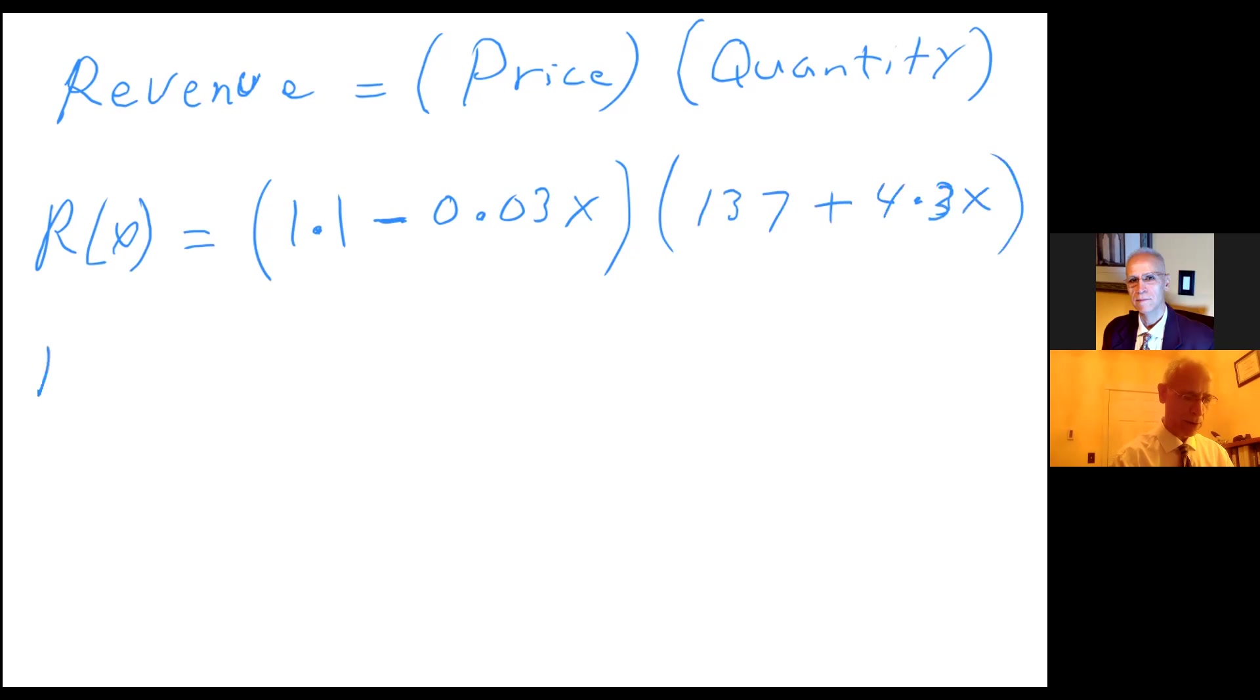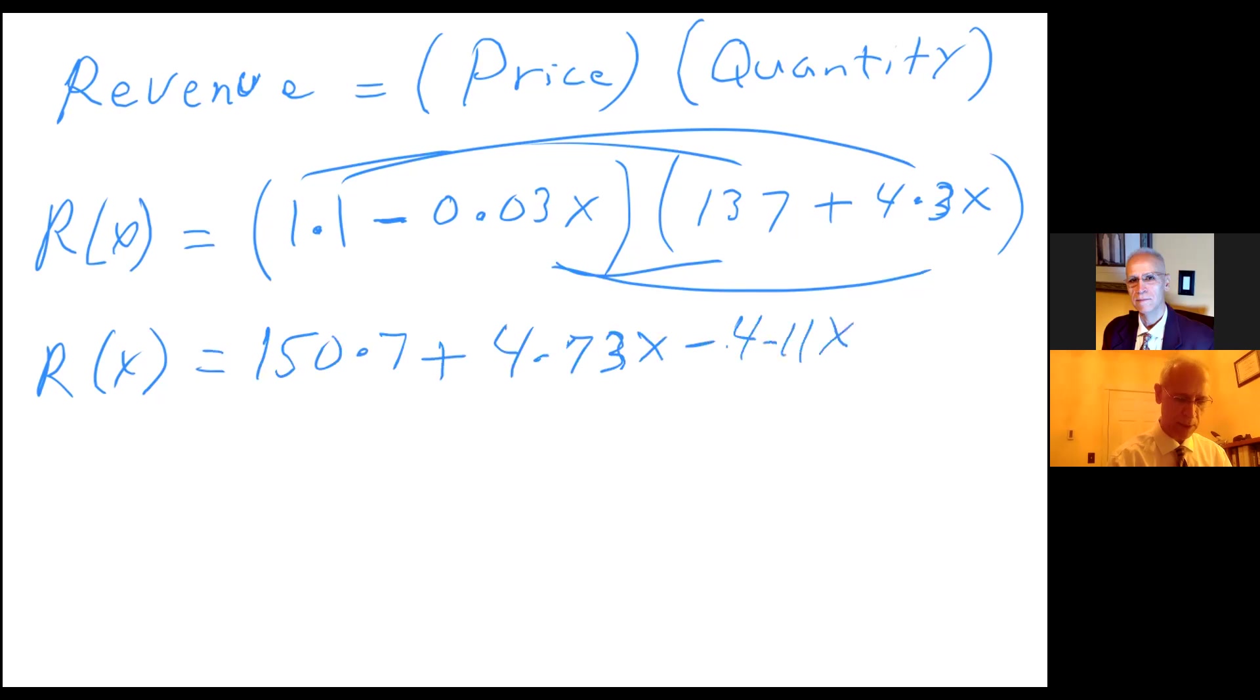So now I can claim that R as a function of x equals, and go ahead and distribute this. I will get, let me use my calculator, 150.7, so that gives me plus 1.1 times that, so 4.73x minus 4.11x minus 0.129x². Let's actually put our x² term in front.